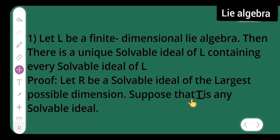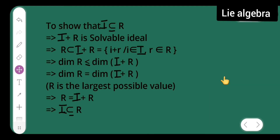Suppose that i is any solvable ideal. We need to show that i is a subset of r. Now, i + r is a solvable ideal, and this implies that r is a subset of i + r.